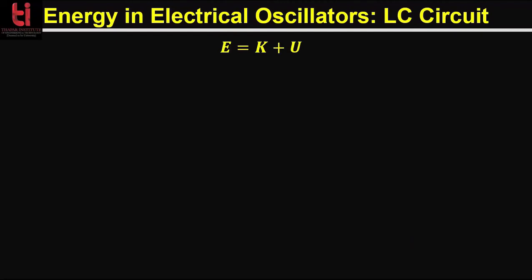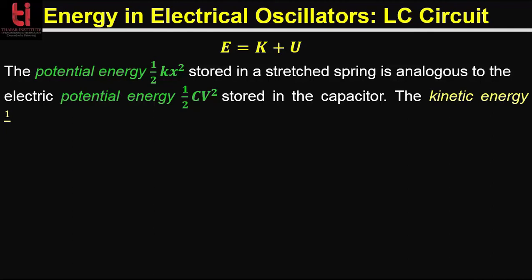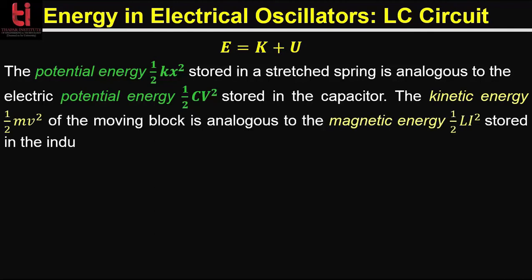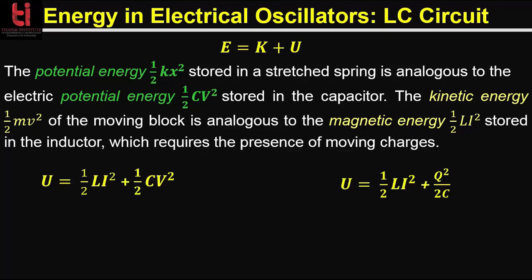Now if we want to know the energy in this LC circuit — for a mechanical system such as the pendulum or spring-mass system, the total energy equals kinetic energy plus potential energy. The potential energy equal to ½Kx² stored in a stretched spring is analogous to the electric potential energy ½CV² stored in the capacitor. And the kinetic energy ½mv² of the moving block is analogous to the magnetic energy ½LI² stored in the inductor, which requires the presence of moving charges. So the total energy in this LC circuit is ½LI² + ½CV², which we can rewrite as ½LI² + Q²/2C.